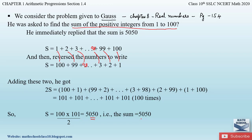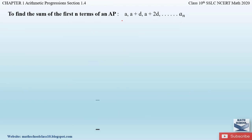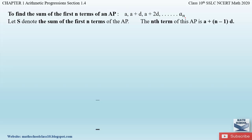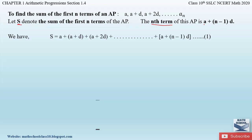We will apply Gauss's trick to our AP to derive the formula for the sum of the first n terms. Let the AP be: a, a+d, a+2d, …, aₙ, where aₙ = a + (n−1)d. Let S denote the sum of the first n terms, so S = a + (a+d) + (a+2d) + … + (a+(n−1)d).